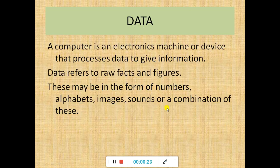What is data? A computer is an electronic machine or device that processes data to give information. Data refers to raw facts and figures. This may be in the form of numbers, alphabets, images, sound, or a combination of these.